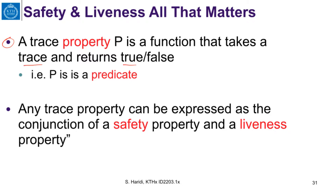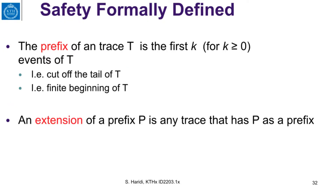A trace property is a function that takes a trace and returns either true if the property is satisfied, or false if the property is violated. A result in distributed algorithms says that any trace property can be expressed as a conjunction of a safety property and a liveness property. So any property you would like to have on traces — on this sequence of events — can be expressed as a conjunction of safety and liveness properties.